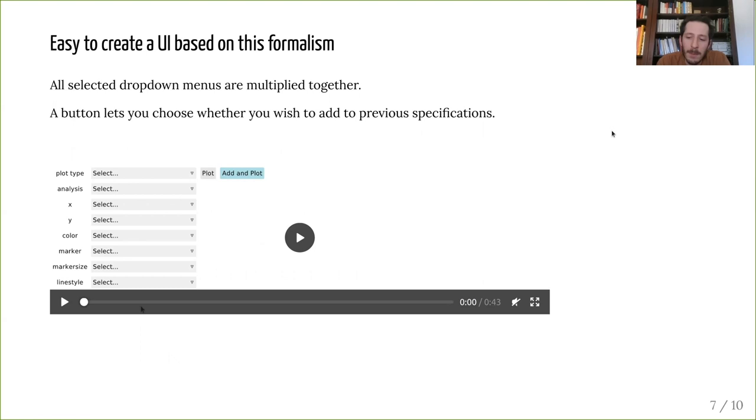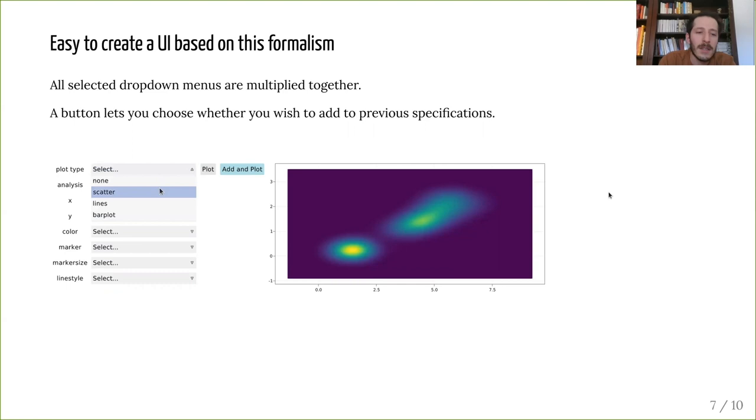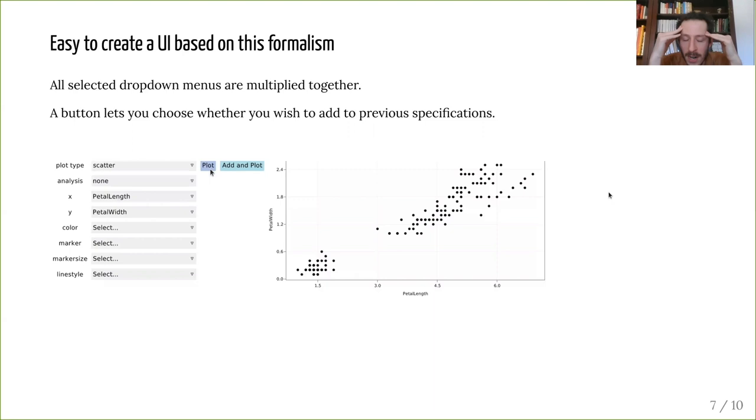Given this framework, I think that the easier way to make a user interface is by making a list of drop-downs for all the things you could select, and then you multiply together all those drop-downs for which the user selected the non-default value. So here, for example, I made a density plot, but now I can change the plot type and then make a scatter plot with the same variables,